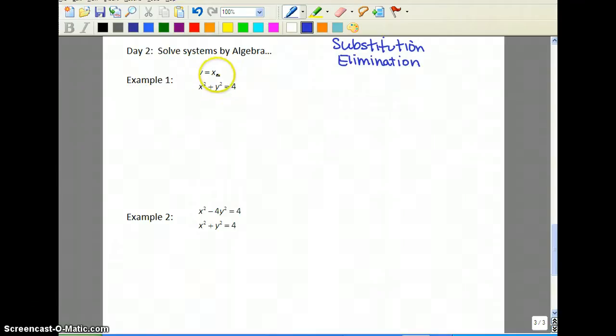So if y equals x, then wherever there's an x, you could put a y, or wherever there's a y, you could plug in an x. And it doesn't matter which way you do it. I'm going to plug the x in for the y. So I'm going to take this x and plug it in for those y's. So I would have x squared plus x squared equals 4. Well, 1x squared plus 1x squared is 2x squared.